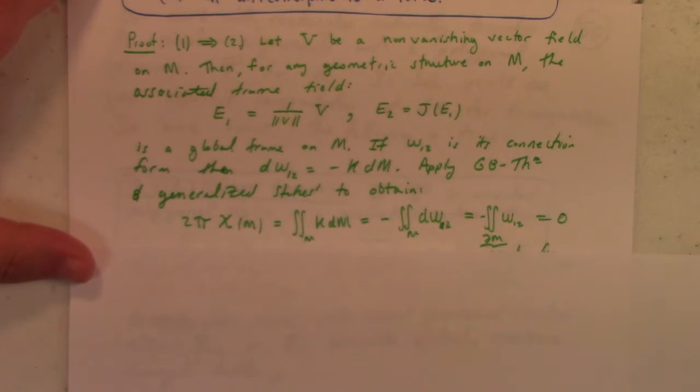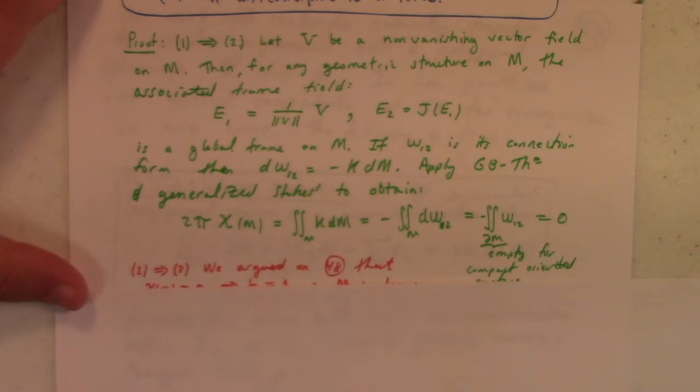We can apply the Gauss-Bonnet theorem and generalized Stokes theorem. 2π times Euler characteristic equals the integral of total Gaussian curvature, which equals the integral of minus the exterior derivative of the connection form. By generalized Stokes theorem, that is the integral of the connection form ω_12 over the boundary of M. But the boundary of M is empty for a compact oriented surface, so this is zero. Consequently, the Euler characteristic is zero.